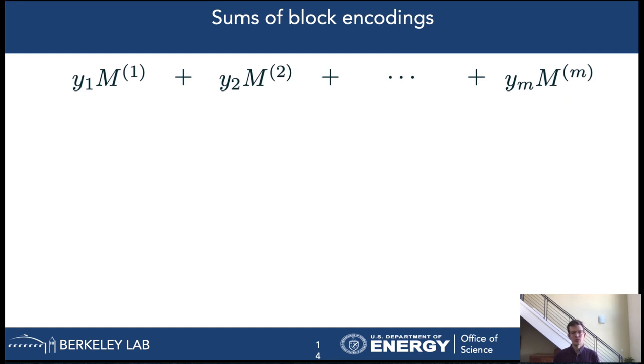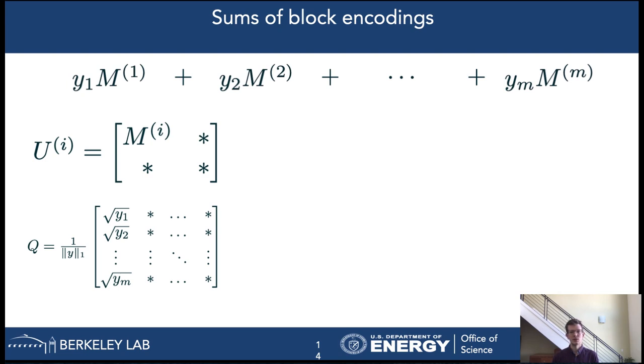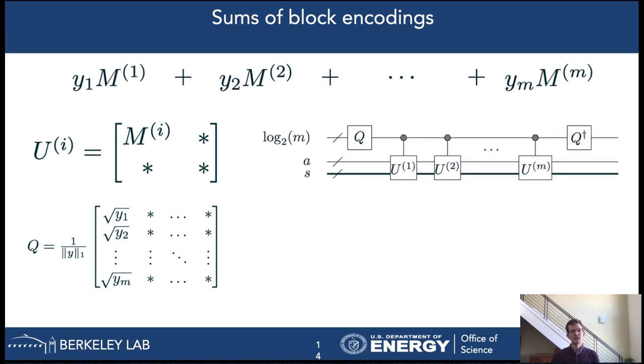To overcome our final issue with the sums in the tensor rank decomposition, we introduce a circuit construction to compute linear combinations of block encodings. Suppose we are given the following expression, for which we want to compute a quantum circuit that block encodes it. We don't have to start from scratch, but assume that we are given quantum circuits that block encode M1 up to Mn, and a quantum circuit that implements a unitary Q with its first column induced by the coefficients Y of the linear combination.